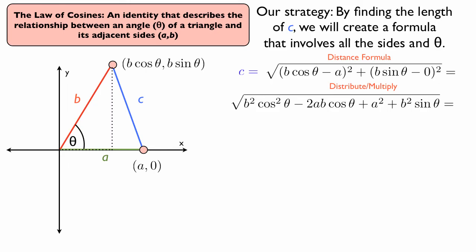And so from there, we can distribute or multiply out those squared terms, and we get square root of b squared cosine squared theta minus 2ab cosine theta, plus a squared, plus b squared sine theta.